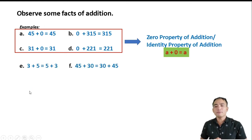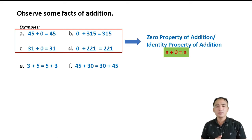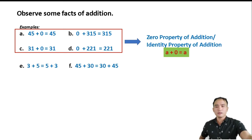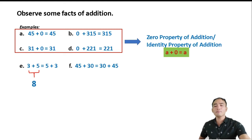For example, 3 plus 5 can be rewritten as 5 plus 3, and 45 plus 30 can also be written as 30 plus 45. Now, 3 plus 5 equals 8, and 5 plus 3 also equals 8. Then 45 plus 30 equals 75, and 30 plus 45 is also 75.